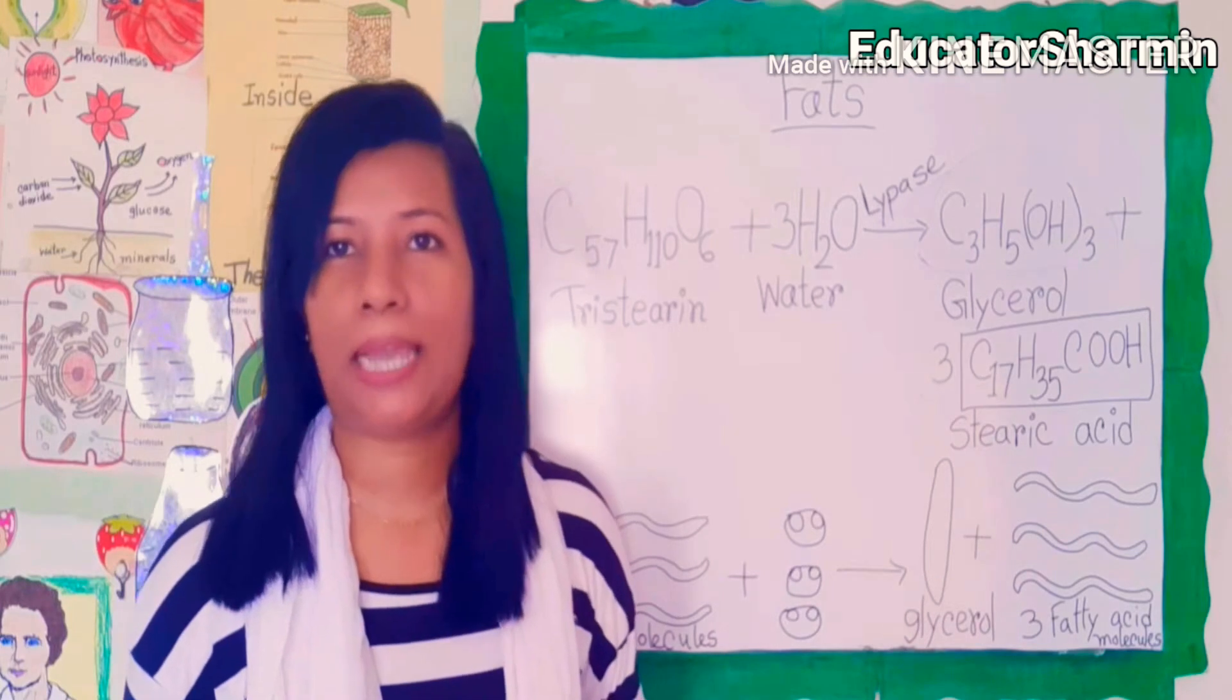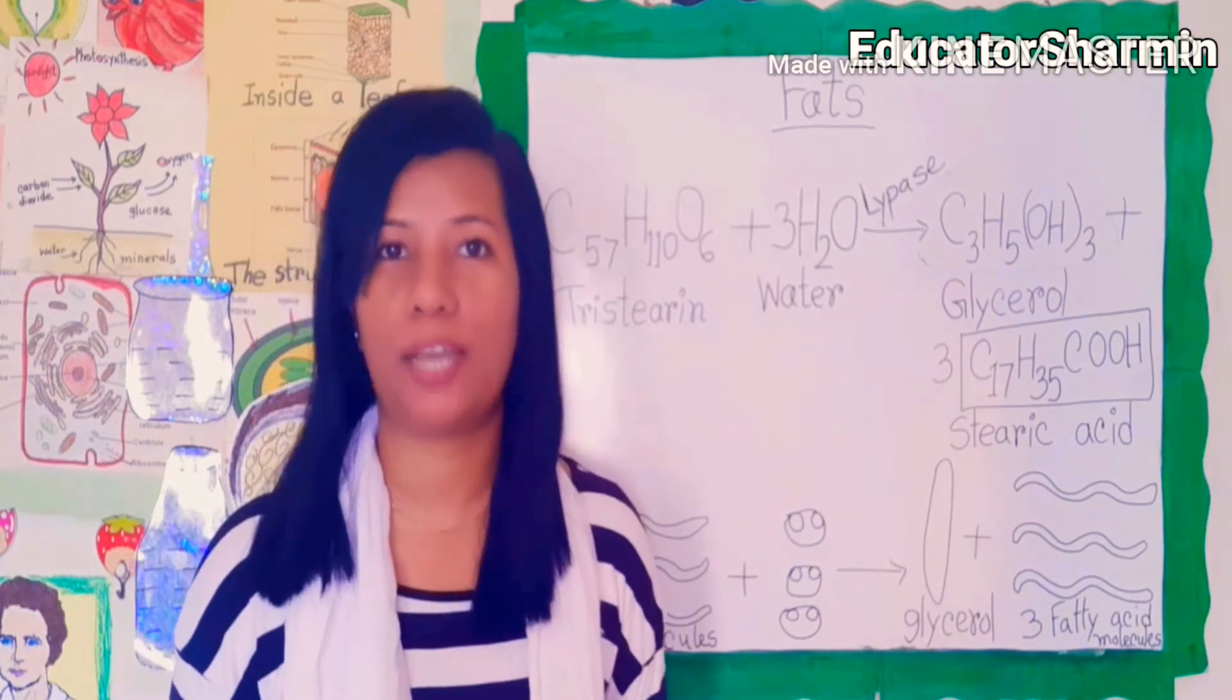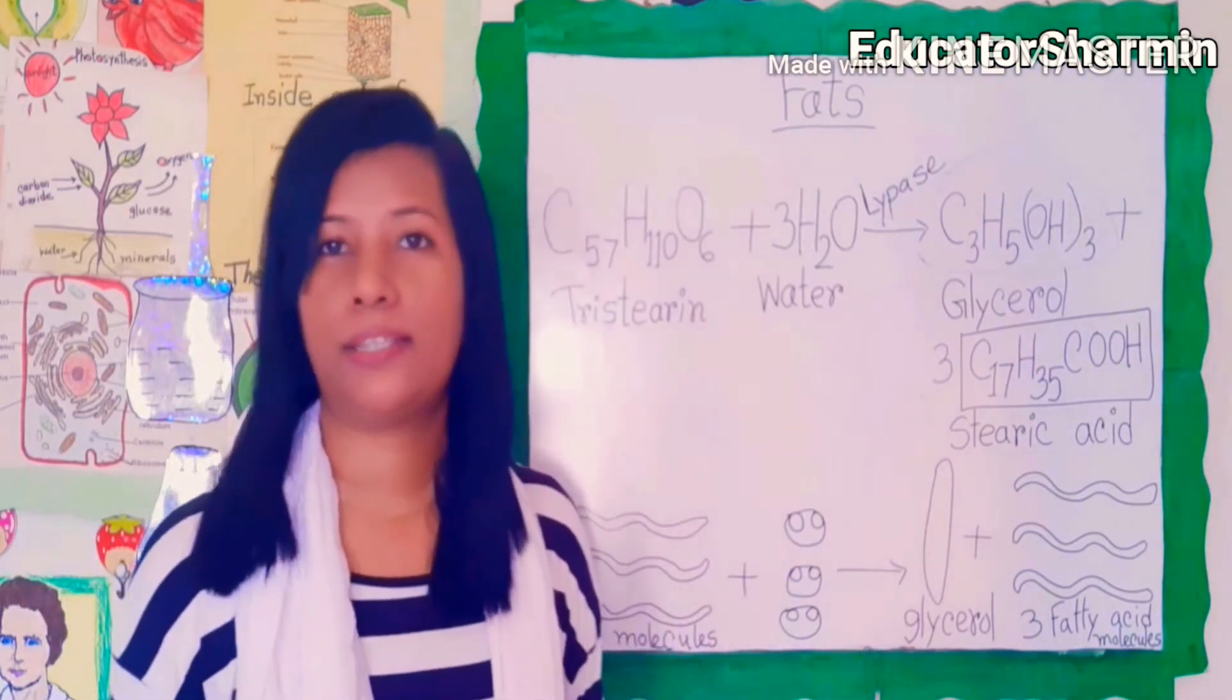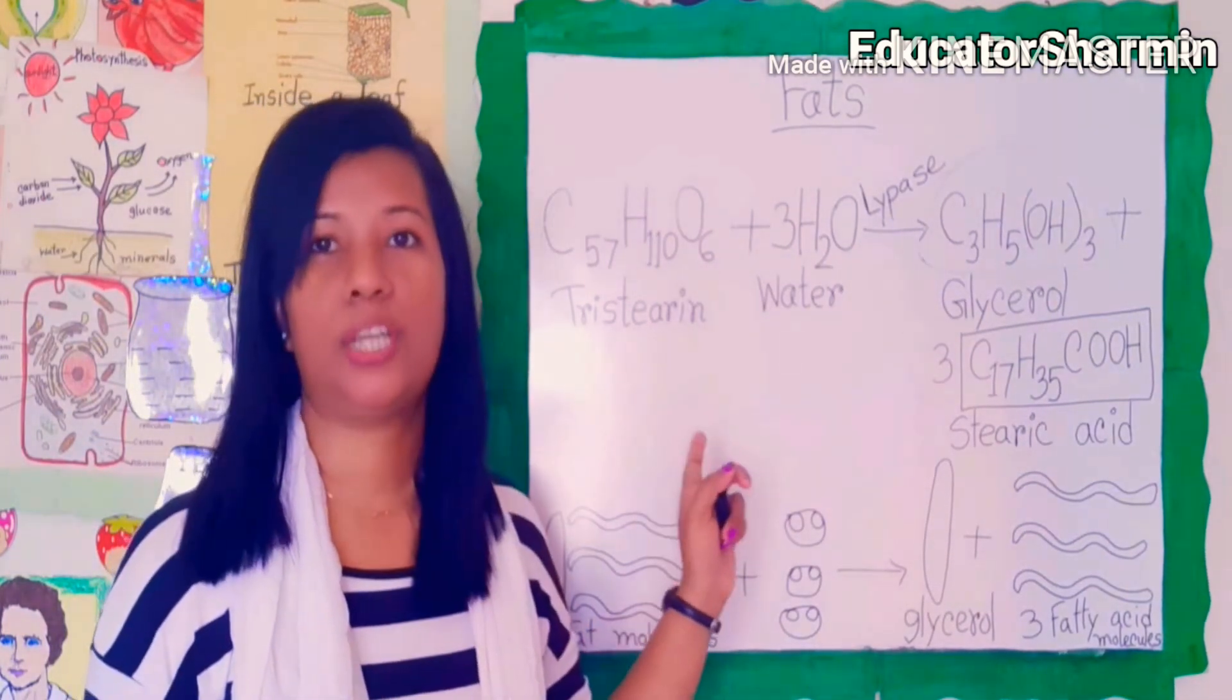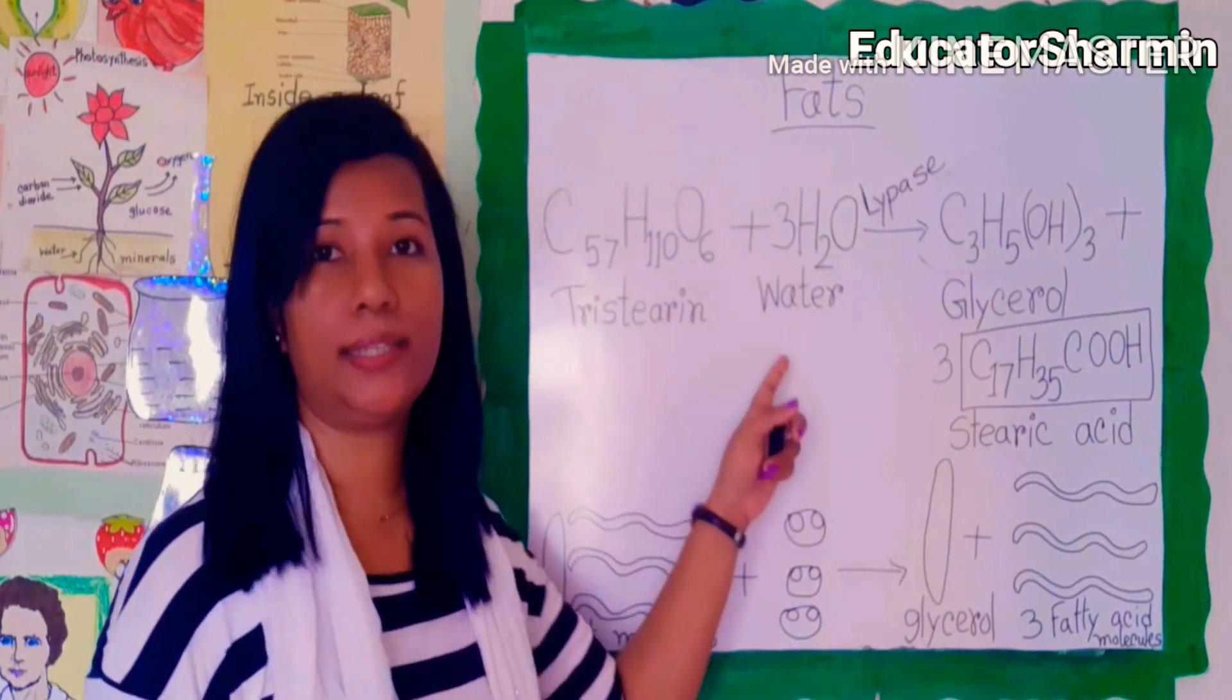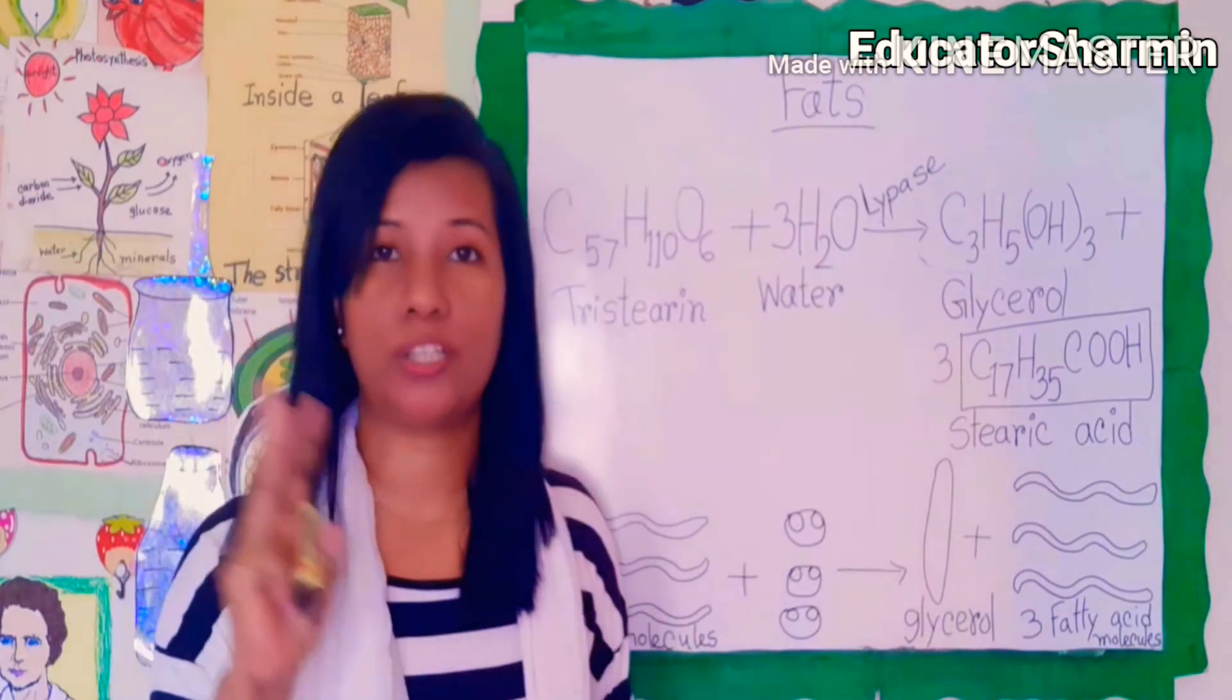Fats can be split into simpler compounds by hydrolysis. This is the process called hydrolysis. For instance, when tristearin is hydrolyzed with water molecules - how many water molecules here? Three water molecules.